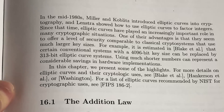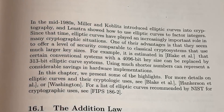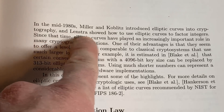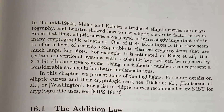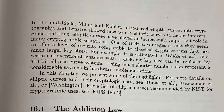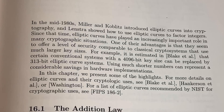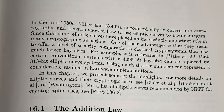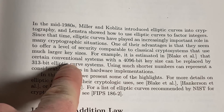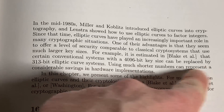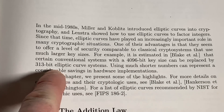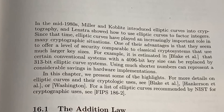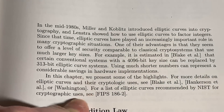In the mid 1980s, Miller and Koblitz introduced elliptic curves into cryptography, and Lenstra showed how to use elliptic curves to factor integers. Since that time, elliptic curves have played an increasingly important role in many cryptographic situations. One of their advantages is that they seem to offer a level of security comparable to classical crypto systems that use much larger key sizes. For example, it's estimated that certain conventional systems with a 4096-bit key size can be replaced by 313-bit elliptic curve systems — using much shorter numbers can represent a considerable savings in hardware implementations.